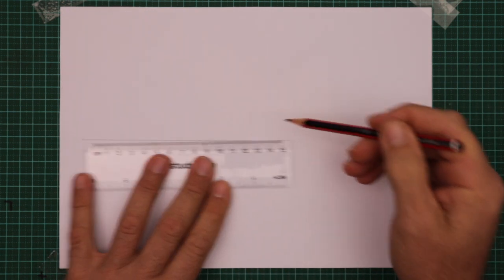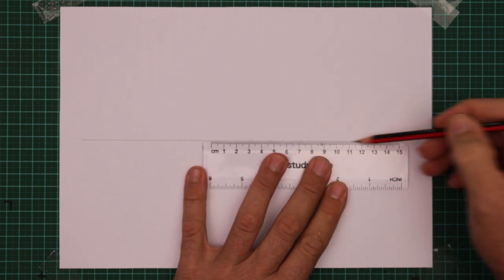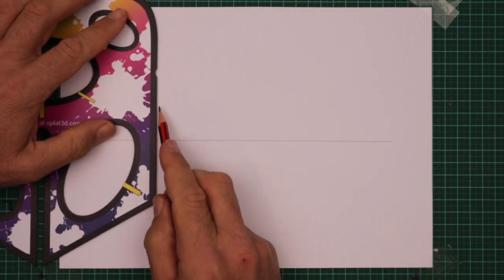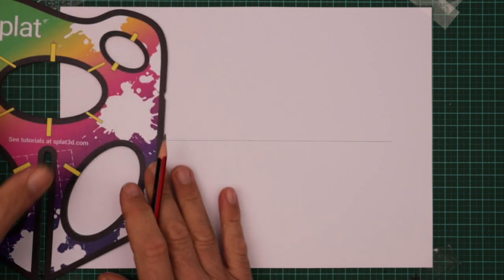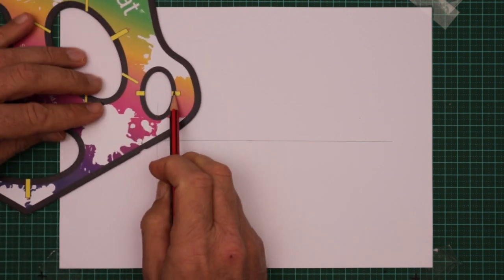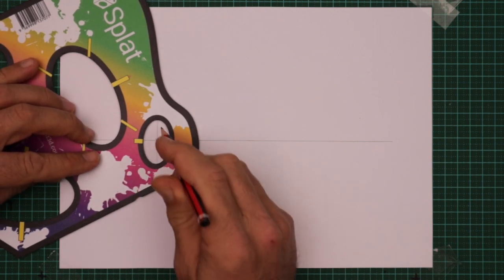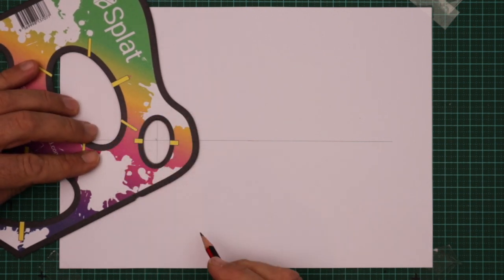Let's start by drawing a centre line all the way across the page, nice and lightly, and give yourself a starting point. I'm going to centre those two little lines on the centre line and then trace around the full ellipse.